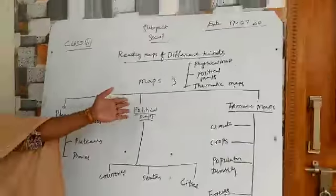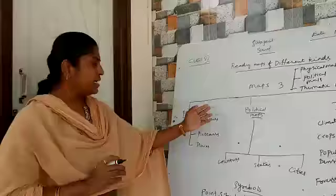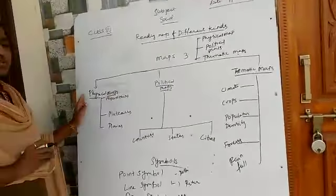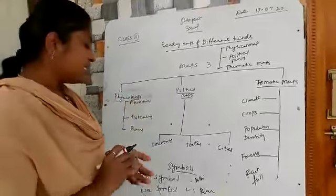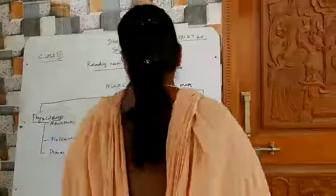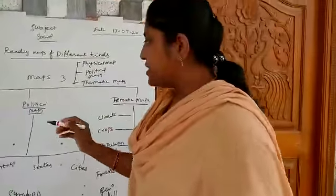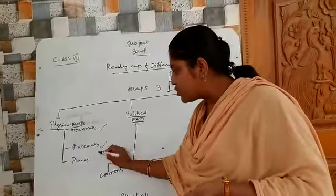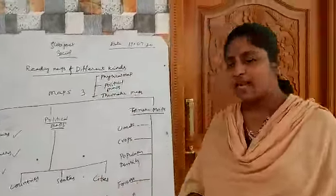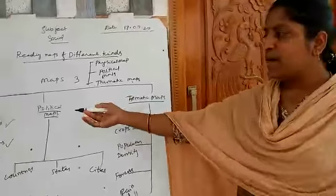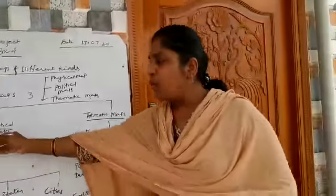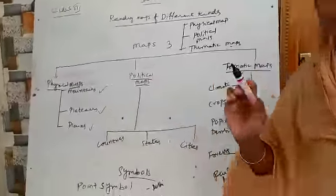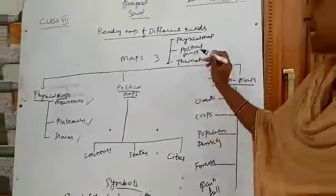Three different types of maps are here and first we are going to learn about the physical maps. What are the physical maps? In a physical map, mountains, plateaus, and plains will be there.